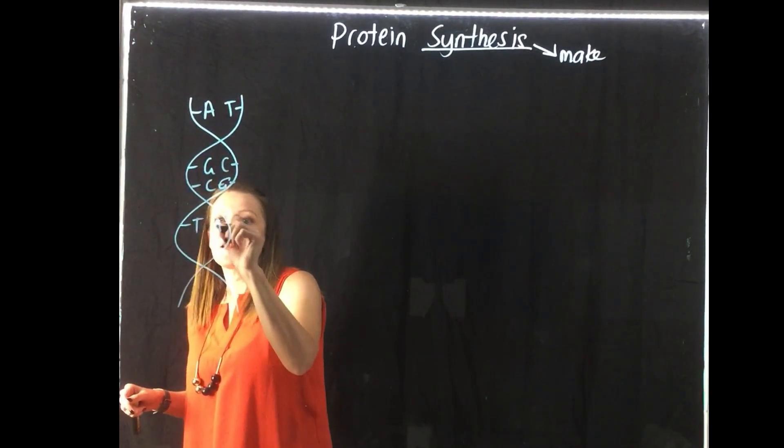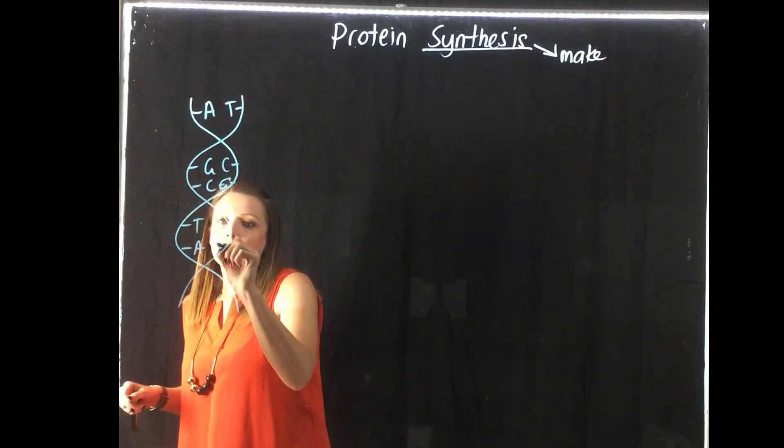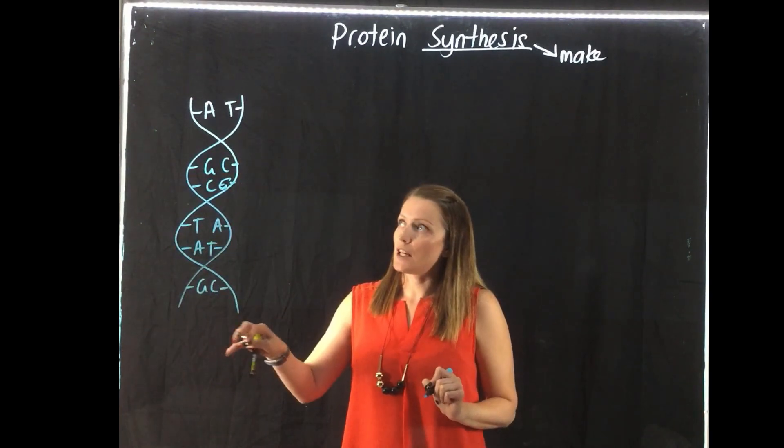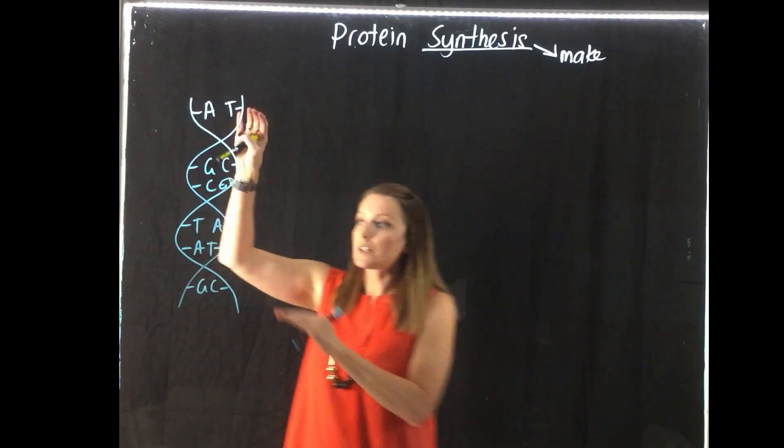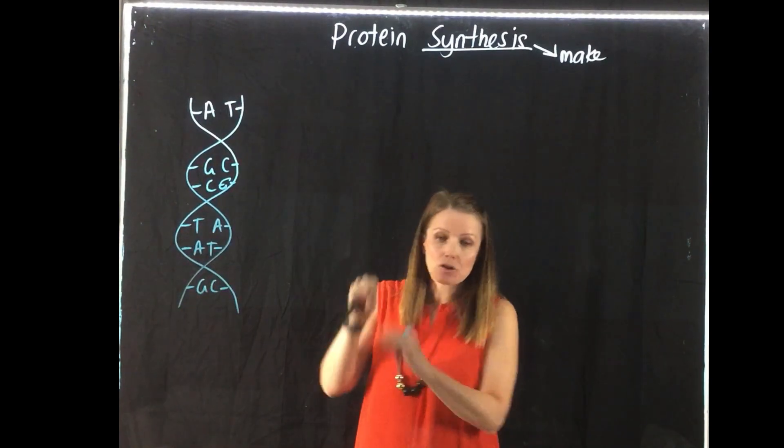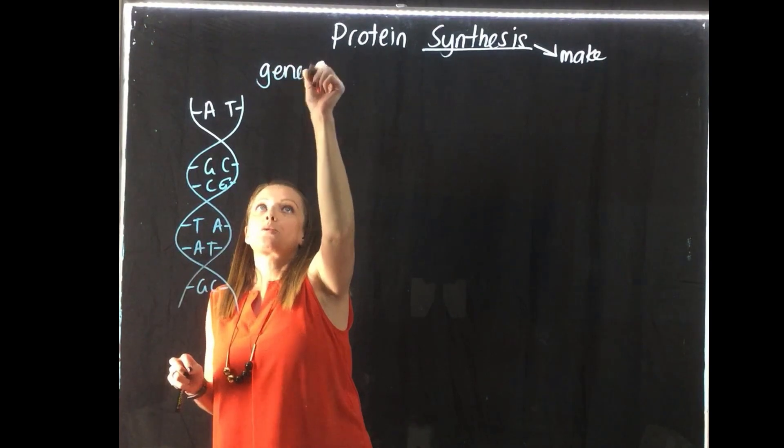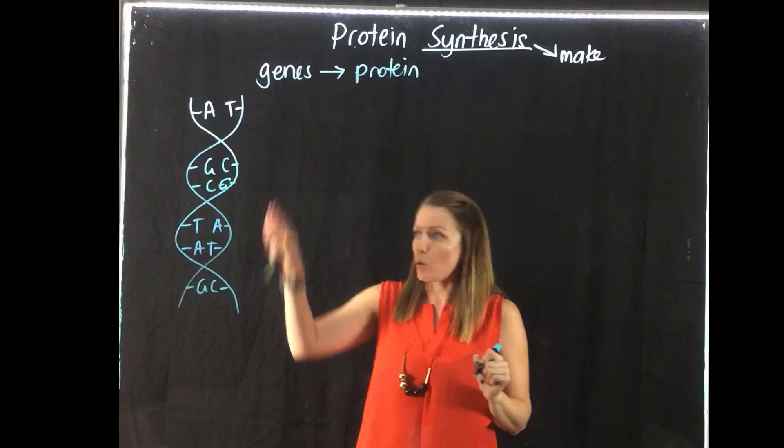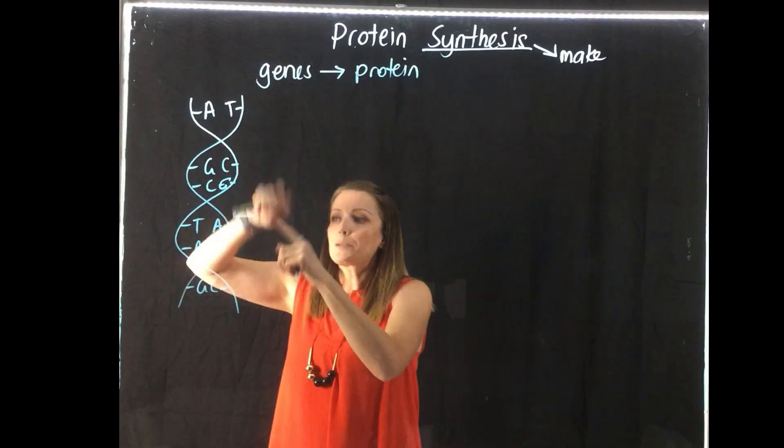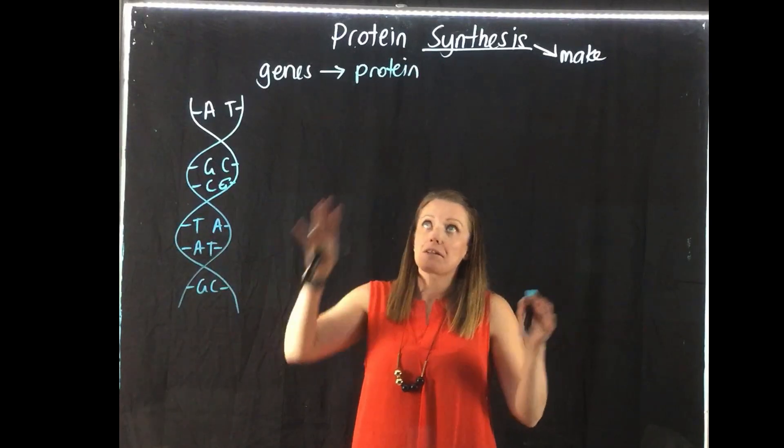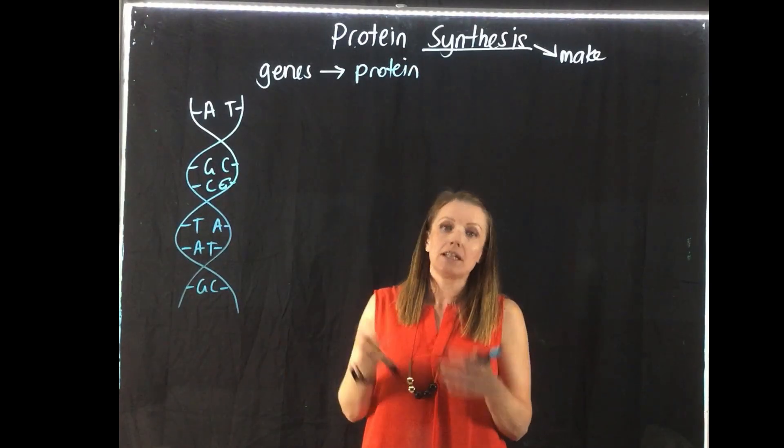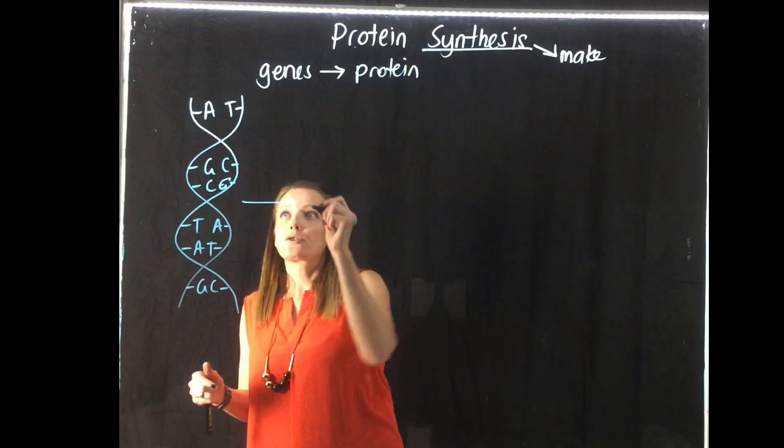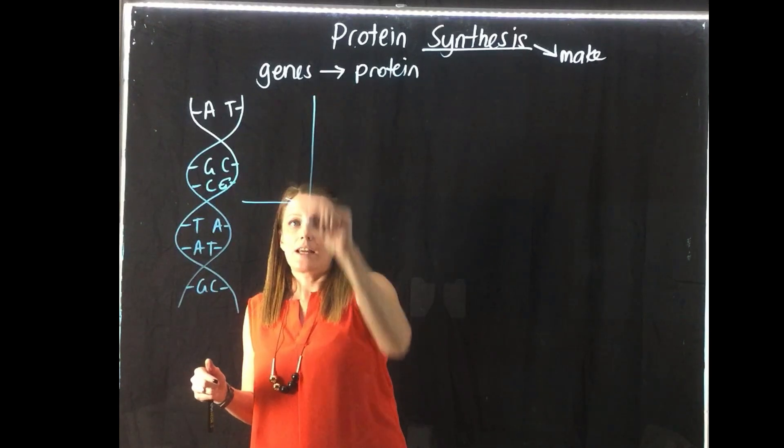So what we're going to be doing is making proteins from our double strand of DNA. So if we start with our double strand of DNA and add some bases, so A and T, G with C, C with G, T with A, A with T, and G with C. So we start off with our double strand of DNA. And we remember that DNA is broken down into genes, and those genes code for our proteins.